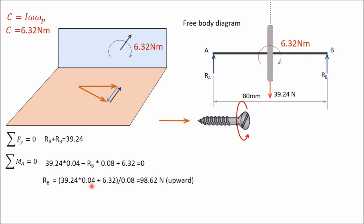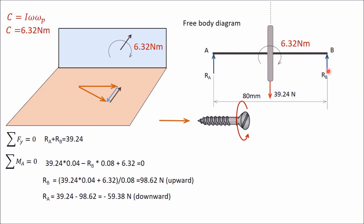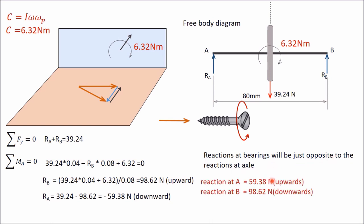Solving the moment equation gives Rb = 98.62 N (positive, confirming the assumed upward direction). Substituting into Ra + Rb = 39.24 gives Ra = 39.24 − 98.62 = −59.38 N. The negative sign indicates Ra acts downward, not upward as assumed. For the bearing reactions, which are opposite to the axle reactions: bearing at A = 59.38 N upward, bearing at B = 98.62 N downward.